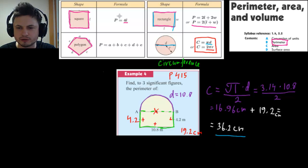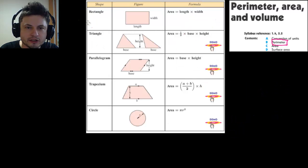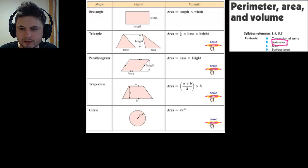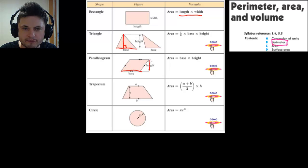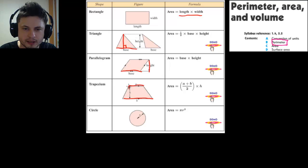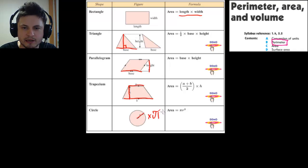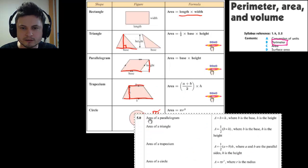Now let's look at area. Here's a list of different area formulas for various shapes. Rectangle area is length times width. Triangle area is half of height times base, where the height is the perpendicular line. Parallelogram area is base times height with no half. Trapezoid area is the sum of the two parallel sides divided by two, then multiplied by the height. Circle area is radius squared multiplied by pi.